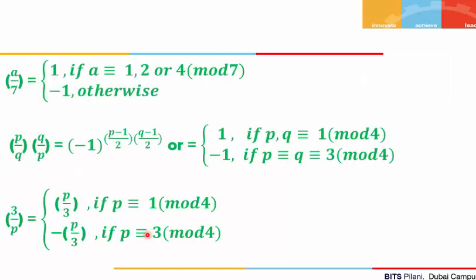Some additional properties: for (a/7), if a ≡ 1, 2, or 4 (mod 7), then (a/7) = 1, otherwise it is −1. Also, (p/q)·(q/p) = (−1)^((p−1)/2·(q−1)/2). If a is 3, we can reverse (3/p) to get (p/3): (3/p) = (p/3) if p ≡ 1 (mod 4), and (3/p) = −(p/3) if p ≡ 3 (mod 4). These additional properties are used for proving many results.